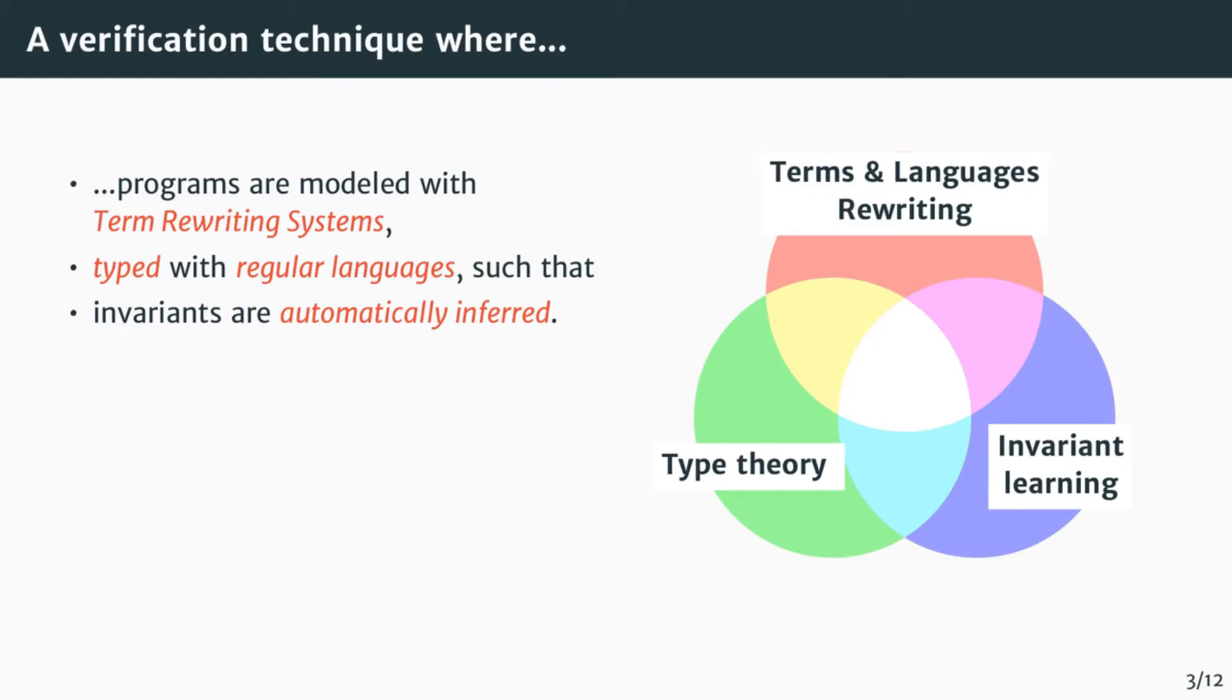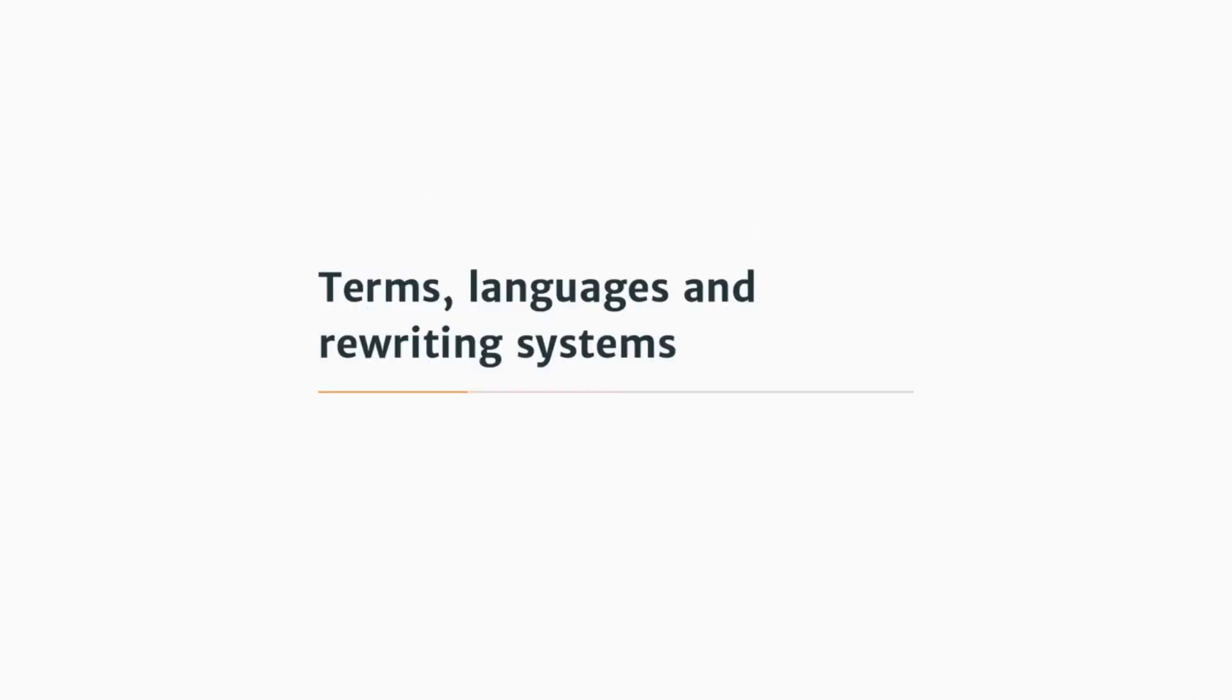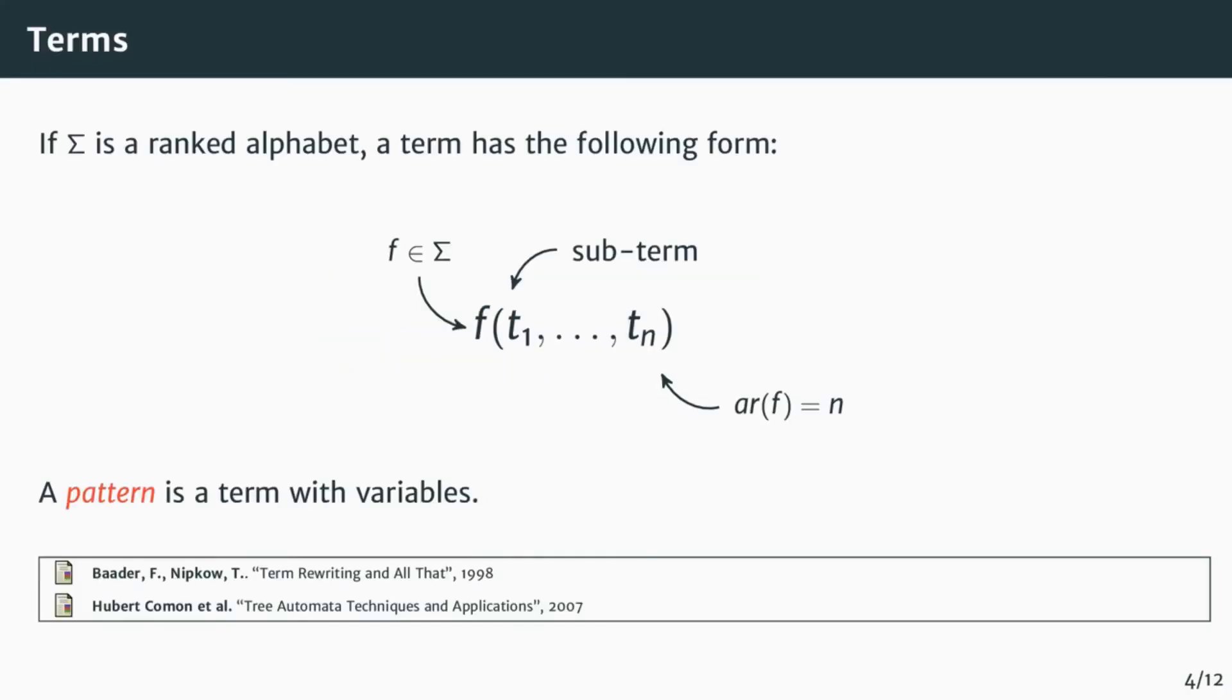Before I detail this type inference technique, let's start by an introduction of our theoretical frameworks: terms, language, and rewriting systems. A term is a labeled tree that we usually represent like this. It is composed of a symbol f, living in a ranked alphabet, and add subterms t1 to tn, where n is the arity of the symbol f.